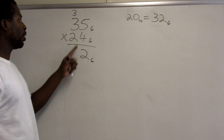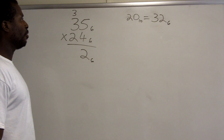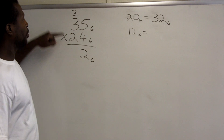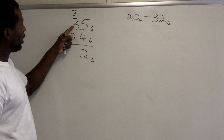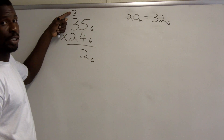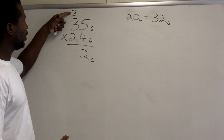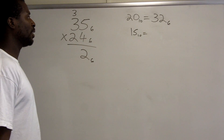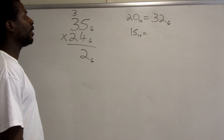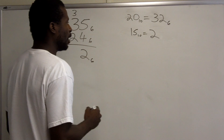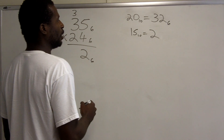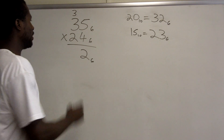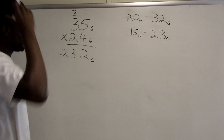Now I multiply 4 by 3, which is 12 base 10. I add the carried 3 to get 15 base 10, and convert that to base 6. How many groups of 6 are in 15? There are two groups of 6, with a remainder of 3. So 15 base 10 is 23 base 6.